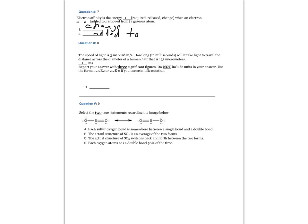Question number eight: Speed of light is 3.00 times 10 to the 8th meters per second. How long in milliseconds will it take light to travel the distance across the diameter of a human hair that is 175 micrometers? Report your answer with three significant figures. If you do not include units in your answer, use the format 2.2e2 or 2.2e-2 if you use scientific notation.